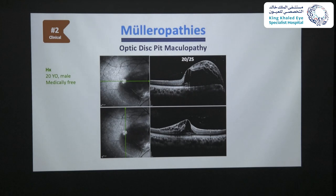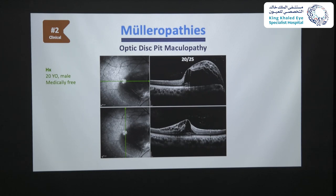Another patient with optic pit maculopathy I was recently consulted for: 20-year-old male, medically free, complaining of decreased vision in the right eye. VA was 20/25. OCT horizontal and vertical scans showed significant schisis involving the fovea but no subretinal fluid. Considering surgery for this patient with 20/25 vision and significant schisis due to optic disc pit maculopathy — should we offer PPV?